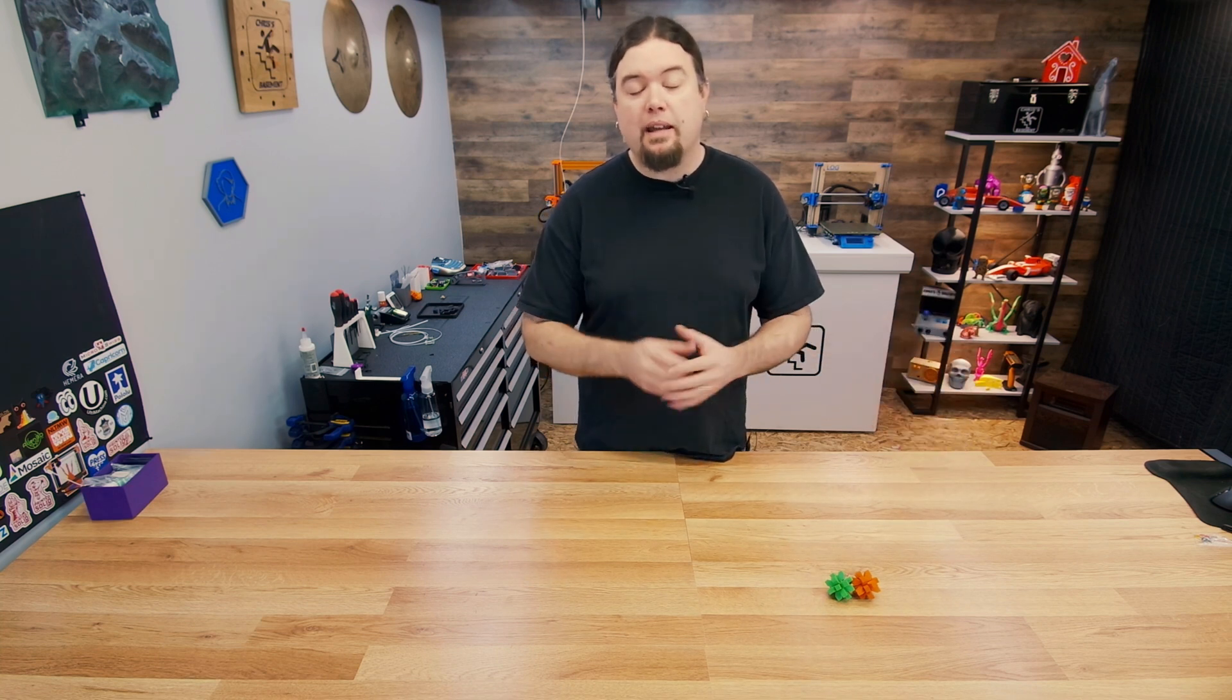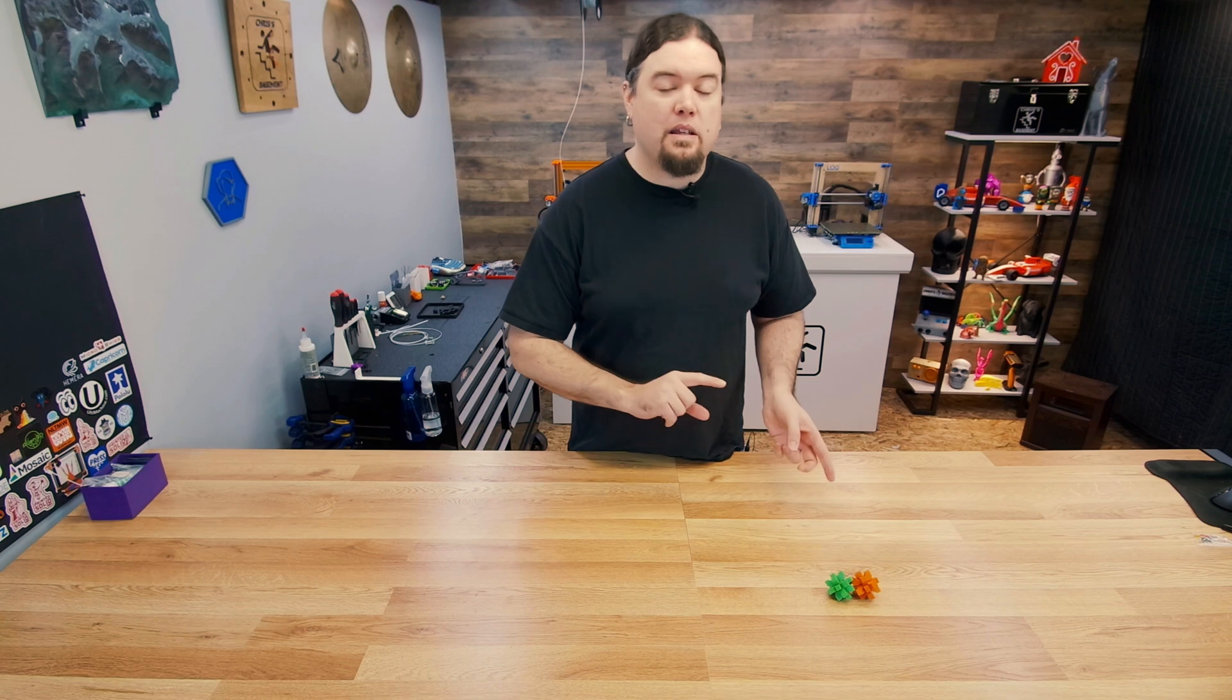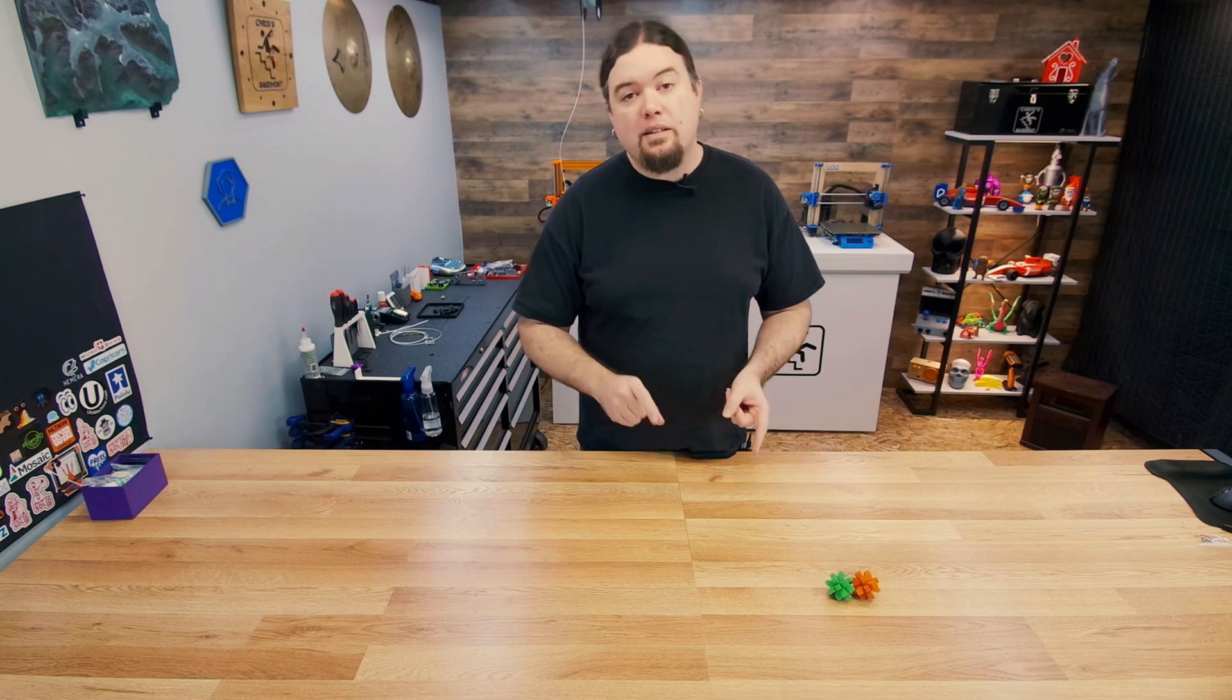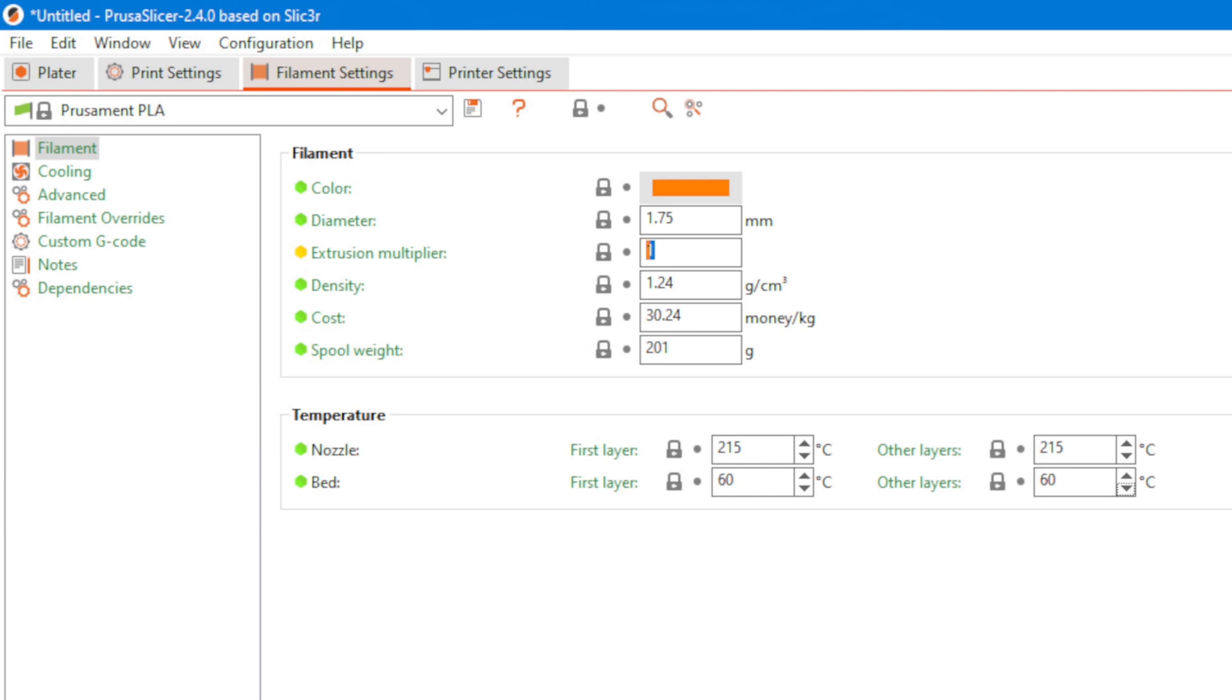There's a couple different ways to combat that. One is calibrating E-steps - I will leave a link in the video description where I've done that in several videos. But what I'd rather see someone do is go into the slicer and correct it there first. This is the quickest way in my opinion to make adjustments to the tolerance of your parts. Maybe the filament isn't quite the size you think it should be, you can adjust for all that right here. So if your parts are fitting too tight you can turn the extrusion multiplier down a bit, 0.9.